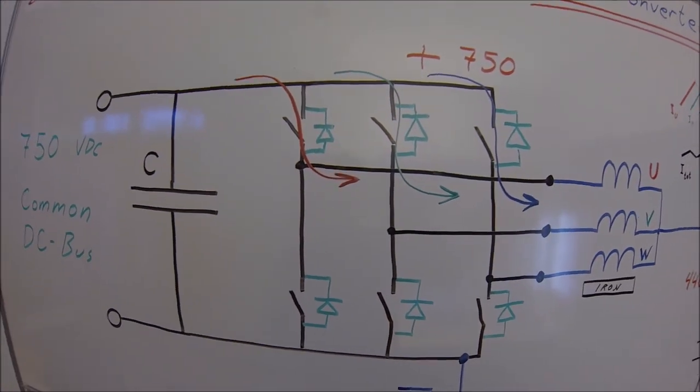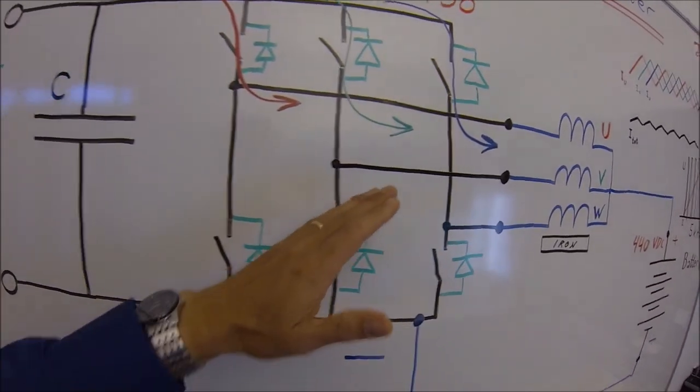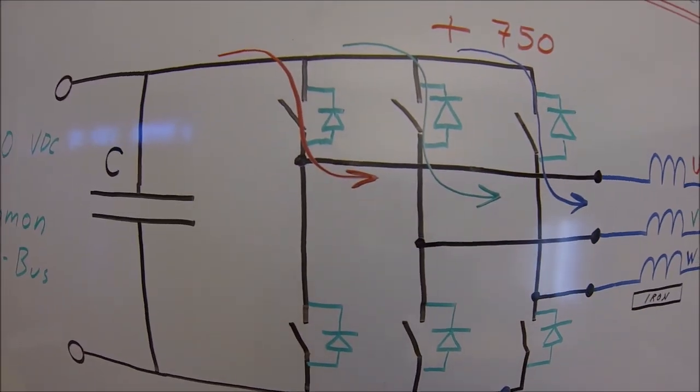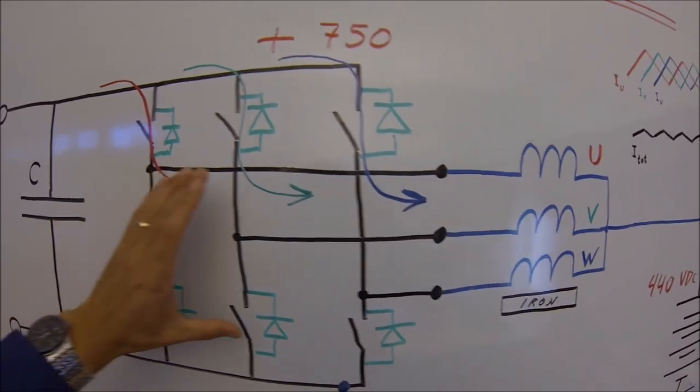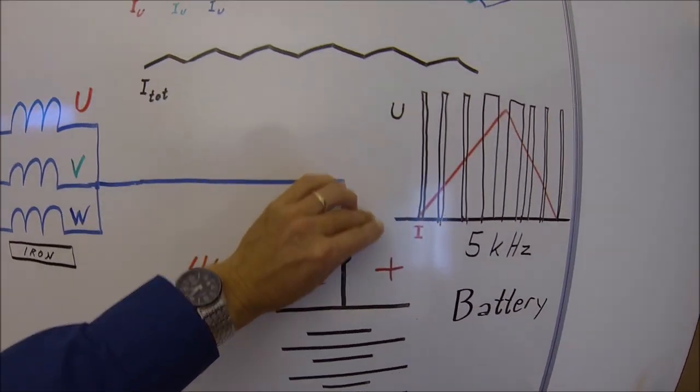The way the DC converter works is by sourcing current through its IGBTs with pulse width modulation. The three motor phases are summarized in this point going to the plus of the battery.